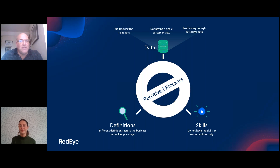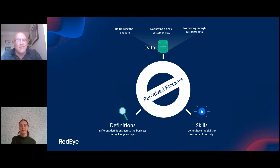Moving on to definitions: there can be different definitions across the business on key lifecycle stages, so there needs to be an agreed and unified definition so the model provides correct results. For example, what classifies a VIP can not only be different for different brands but can also be interpreted differently internally by key stakeholders. Models are built to be bespoke, so it doesn't need to be a blocker. Finally, skills: some businesses don't have data scientists internally to build and run these models — but again, not a blocker. There are teams like mine that can help build these models and implement them effectively, so you don't need to be the expert.